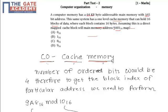Address 9A81₁₆ maps to which address - that we have to find. Now let's start the solution. The number of offset bits would be 4, therefore to get the block